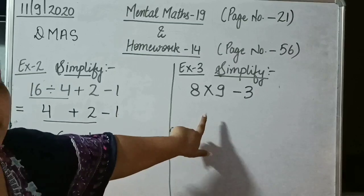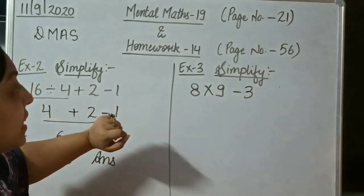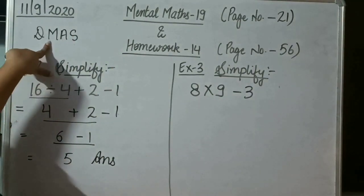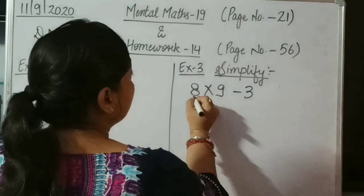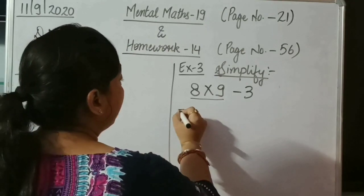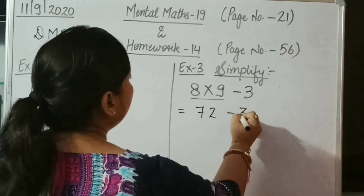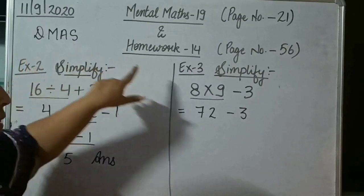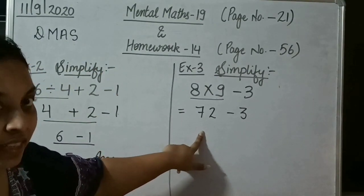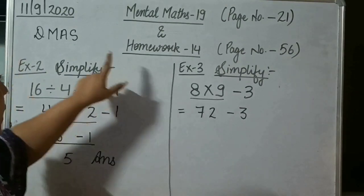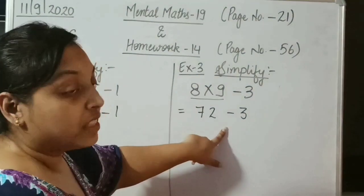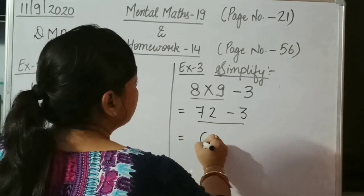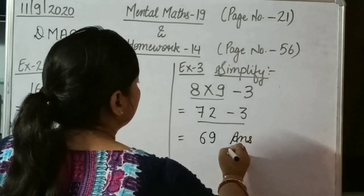And now in second example, we will check for division, but we can see that there is no divide. So skip division and move to multiplication. Where is multiplication? 8 into 9. So 8 nines are 72. Now the rest will be copied down as it is. Later on we will move to the third operation, that is addition. In this example, we can see that the addition is not present, so skip addition and move to subtraction. Now we can see that there is subtraction. 72 minus 3 will be 69. It means the answer for this is 69.